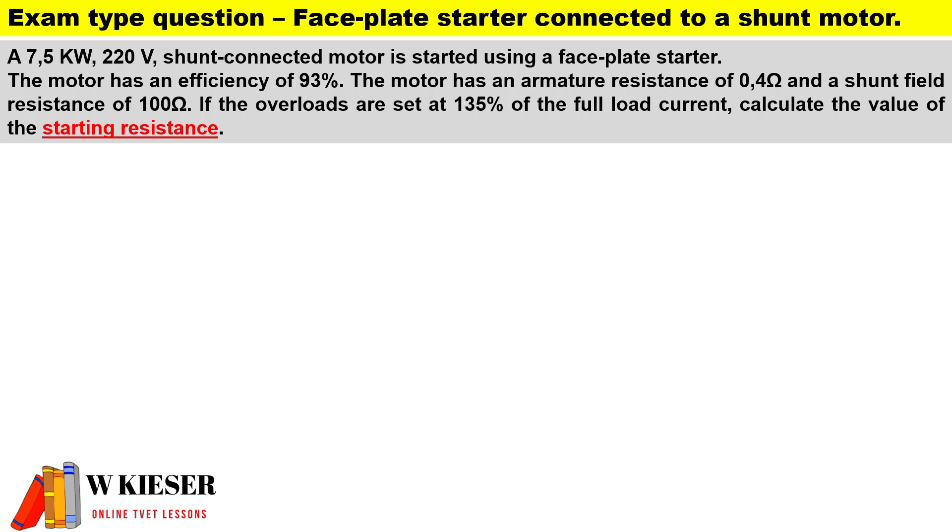If the overloads are set at 135% of full load current, calculate the value of the starting resistance. Let's first write the formula for how we calculate R_start.